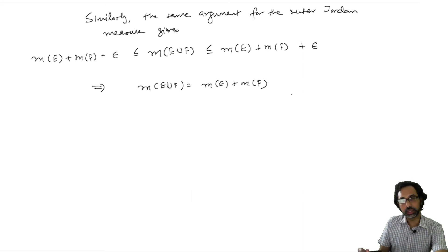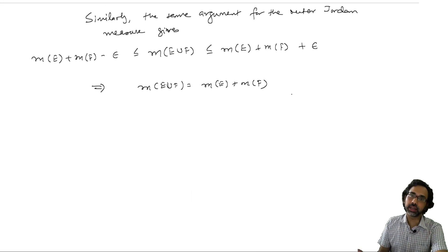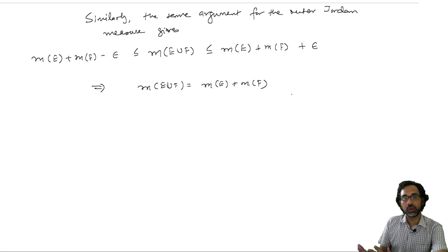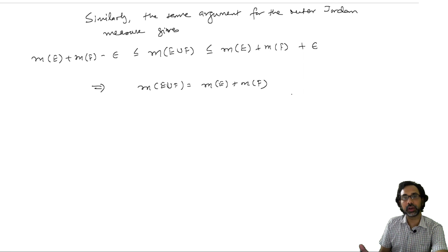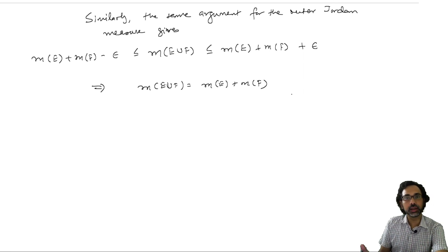We stop our lecture here, and in the next class we will see what specific examples of Jordan measurable subsets of R^d we can produce, and we will see that there are plenty of them.